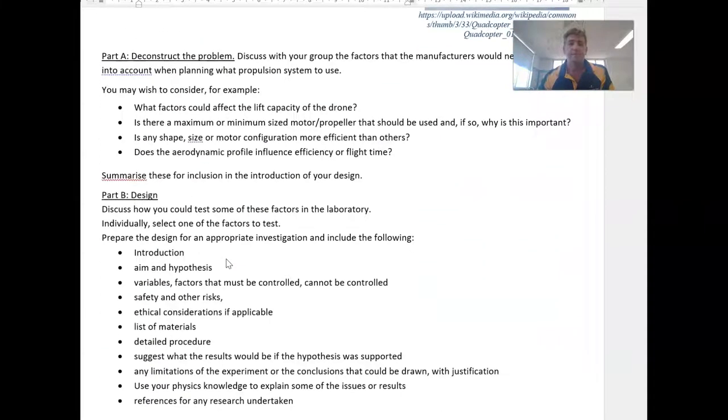So here are some examples that I prompt students with. You may wish to consider, for example, affecting the lift capacity, minimum maximum size of the motors, how many, the shape and size of the drone itself, the aerodynamic profile, and then we flesh out more and more based on the content that we've covered in class up until that point. So I tend to give my students the deconstruct and design task in mid term 3 because by then I've covered all of the motion in physics, all of the fields, and I've introduced and covered most of the light and matter, which means I've opened up the entirety of my course almost to students to be able to use whatever ideas they want in order to break down the problem and develop a way to solve part of that problem.